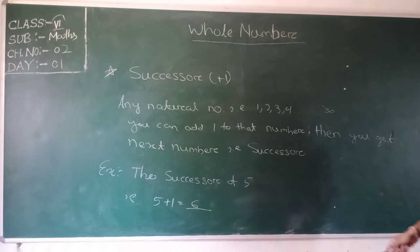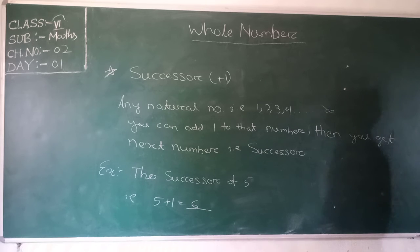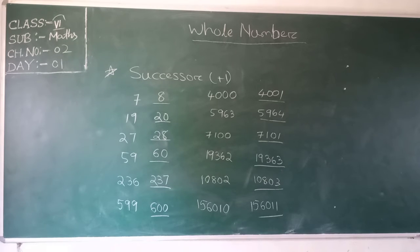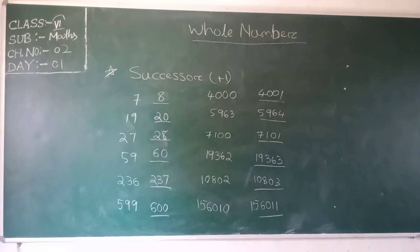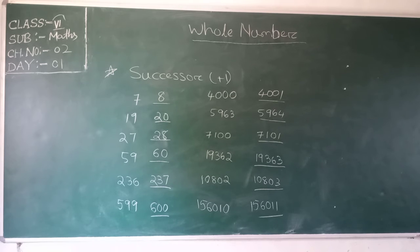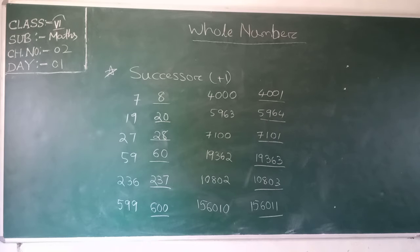Let us discuss some more examples. Successor means the after number. The after number of 7 is 7 plus 1 equals 8. Similarly, the after number of 19 is 19 plus 1 equals 20. Likewise, the after number of 27 is 28, and of 59 is 60.